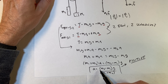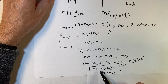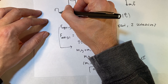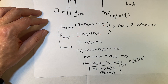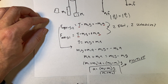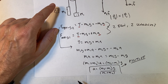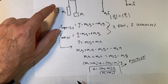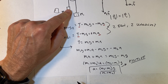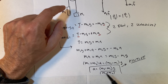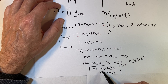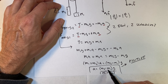Is the acceleration going to be greater than or less than g? If I took another mass with no string and dropped it, that one would have an acceleration of g. So this one has to have an acceleration less than g.